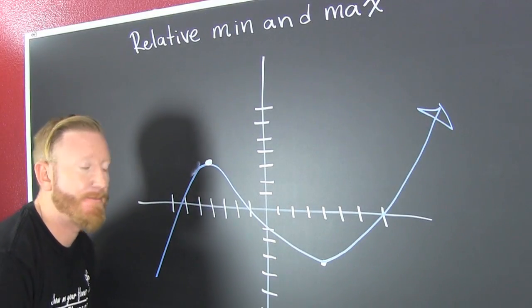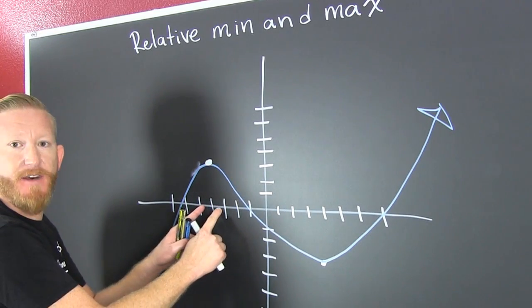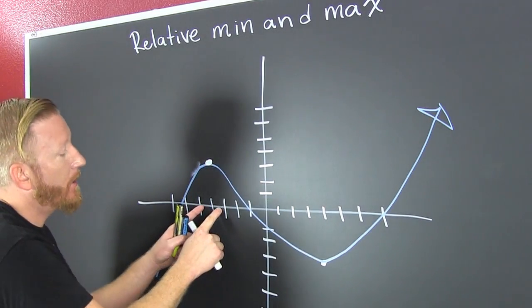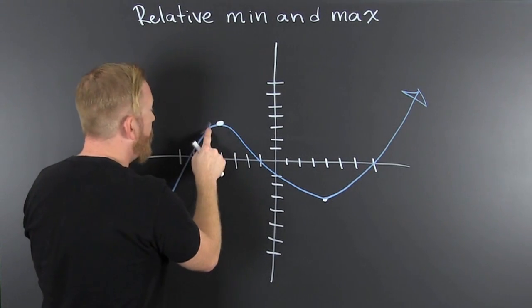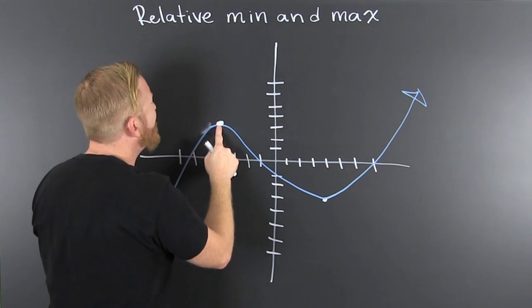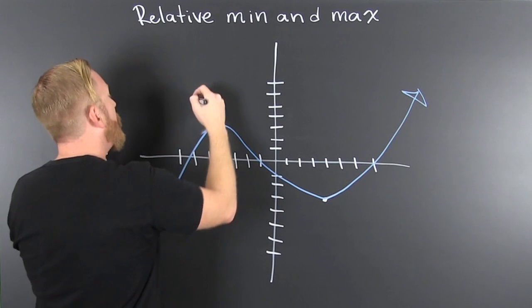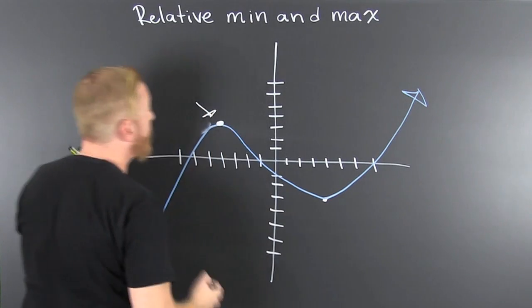We're looking at the x values around here. It's lower there for y and it's lower there for y, so this guy's high right there. That's the relative max.